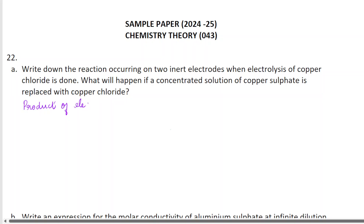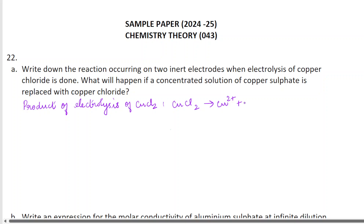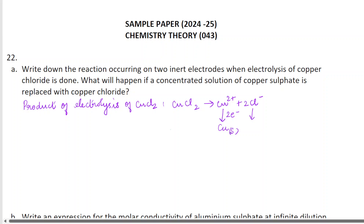Product of electrolysis of copper chloride. So copper chloride — as we know — CuCl₂ dissociates into Cu²⁺ plus 2Cl⁻. So in this solution, the positively charged Cu²⁺ will move towards the negative electrode, and the Cl⁻ will move towards the positive electrode.